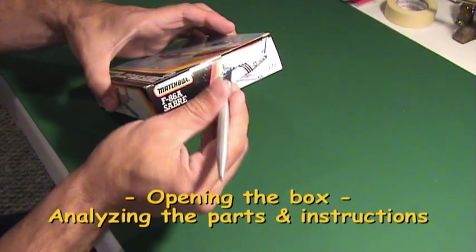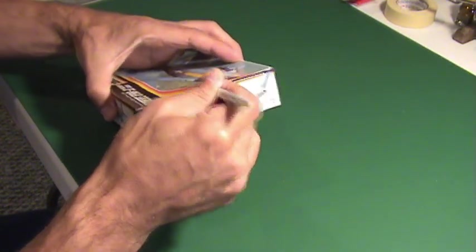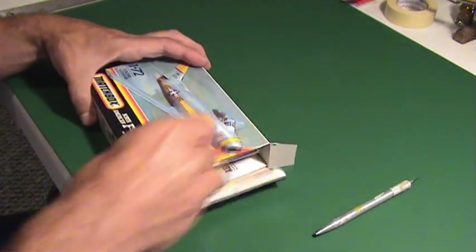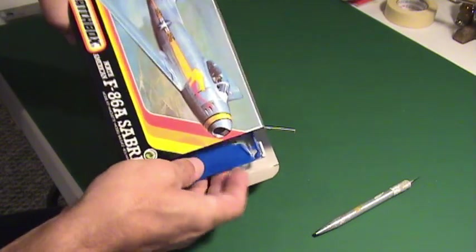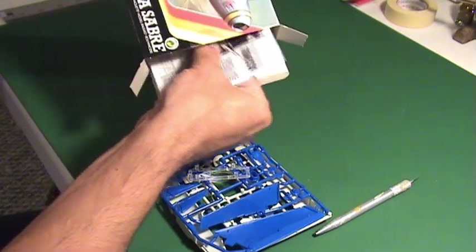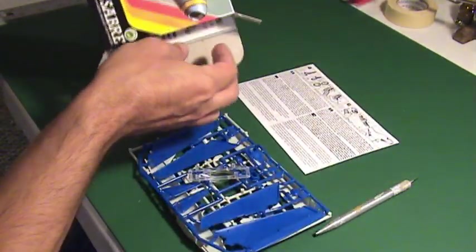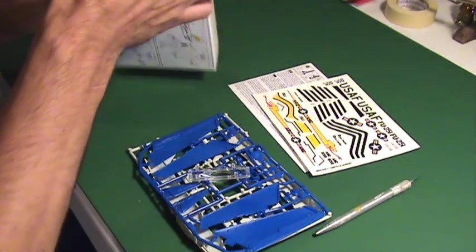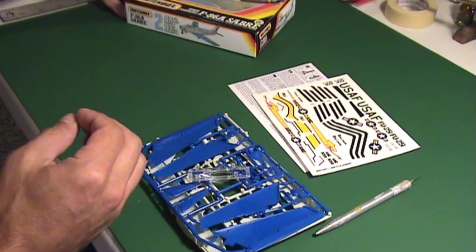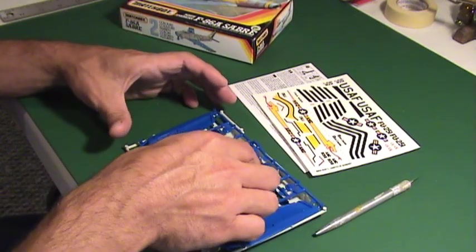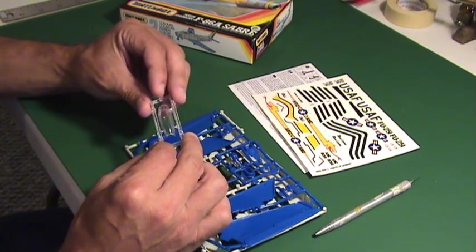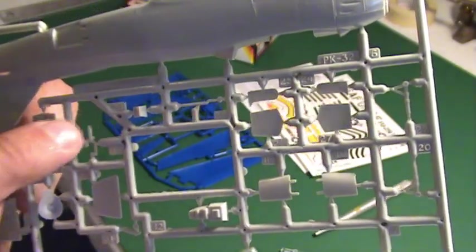This is one of the most exciting steps of the whole construction process. Carefully open the box and analyze the plastic parts attached to the sprues. Notice that every part is identified by a number.